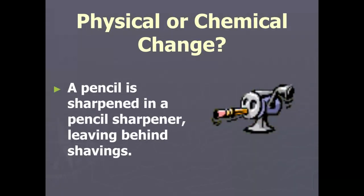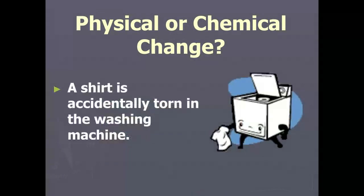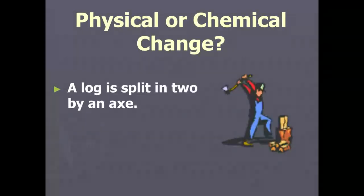A pencil is sharpened in a pencil sharpener, leaving behind shavings — it's still little bits of pencil, not something new, so it's a physical change. A bicycle rusts when left in the rain — it is something new, reacting with oxygen in the air, so it's a chemical change, and you can't easily turn the rust back into iron. A shirt is accidentally torn — it's still a shirt, so physical change. A log is split in two by an ax — it's still a log, just smaller pieces, so that is a physical change.